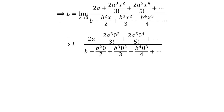The limit L is no longer in any indeterminate form, so we can replace x by 0 to find the limit value. After simplifying the above expression, we are left with limit L equal to 2 times a upon b.